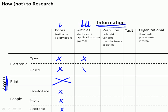Most journals are closed unless you have a subscription or your library has a subscription, but articles are available for people to walk in and read and print. Finding out about these articles is done through people in face-to-face, phone, or electronic contacts.